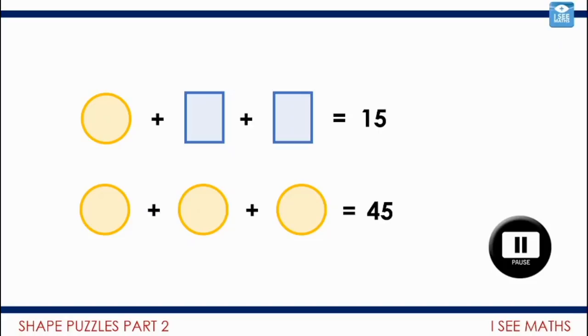Well, let's have a look because there's something interesting I find about this one. Well, I've got three of the circles and that equals 45. So each circle must be an equal amount. Each circle must be worth 15. So the rectangles, to make 15, well, I must be adding zero each time. The rectangles must actually be worth zero.